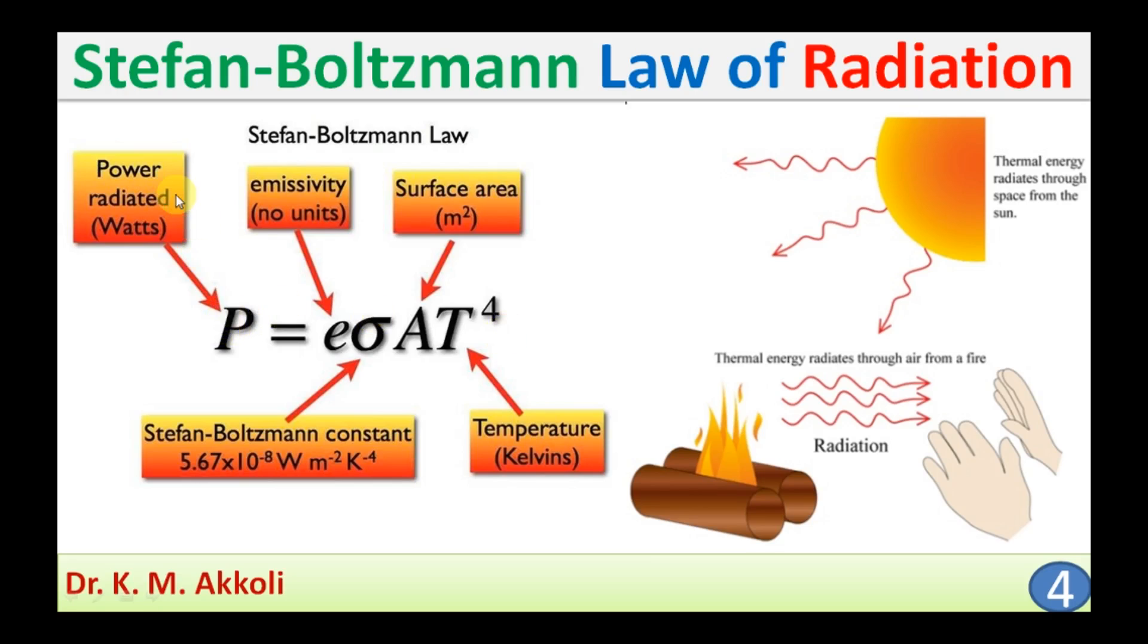Here this can be given as the power radiated or energy emitted in terms of the emissivity ε. It has no units because it is the ratio of the emissive power of the surface to the emissive power of the black body. And this is the surface area in meter square, that is the surface area of the emitting body.